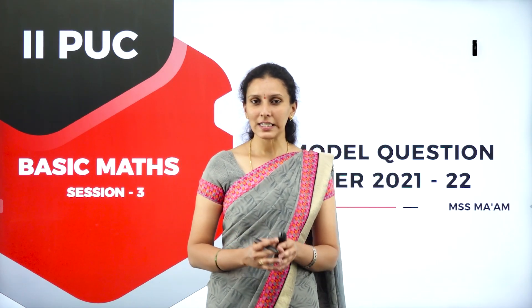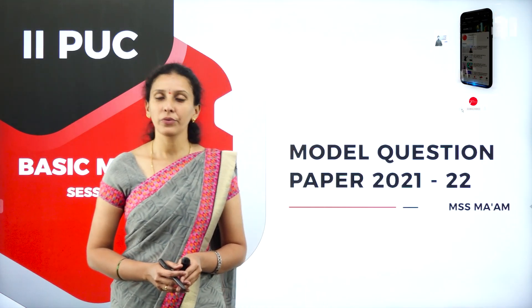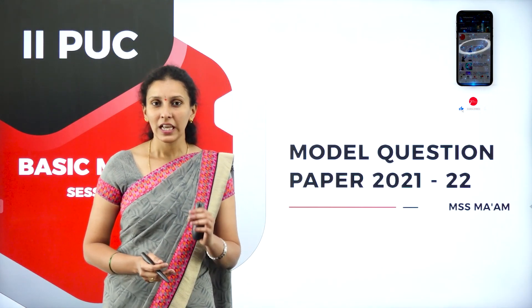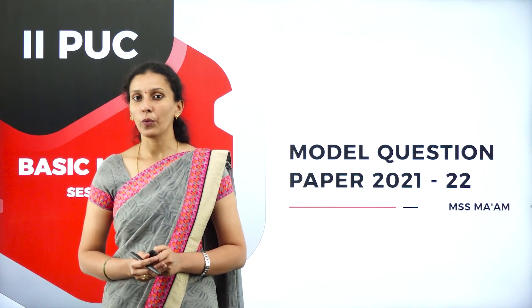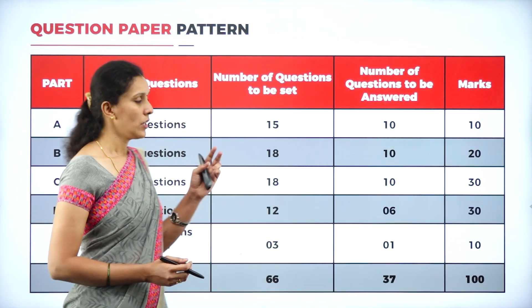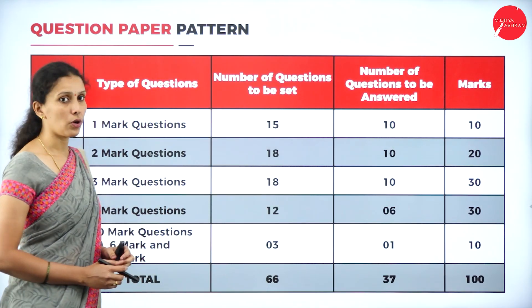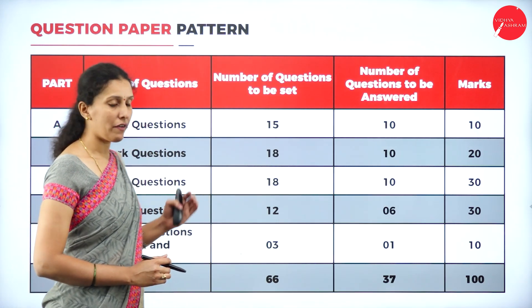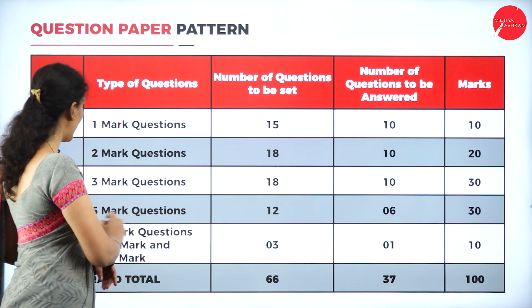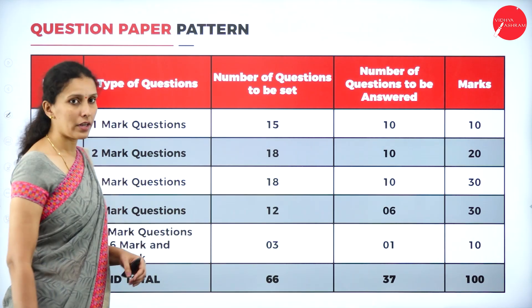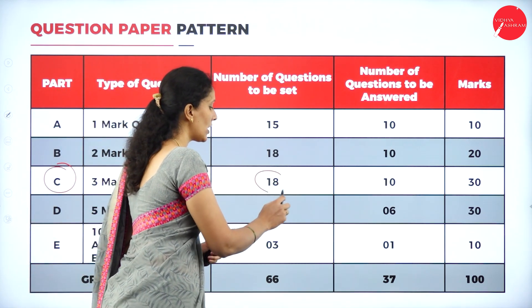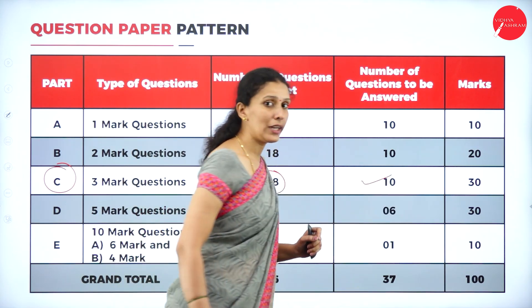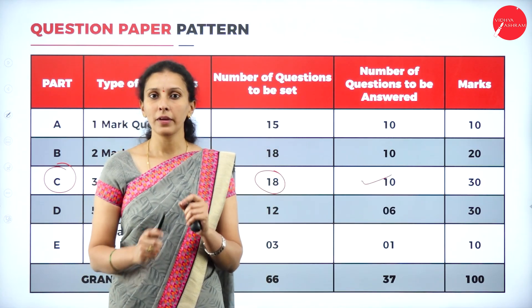In our previous session, we were discussing about the model question paper prescribed by the pre-university board of Karnataka. We have discussed Part A and Part B questions. In this session, I will be continuing with Part C questions, that is 3-mark questions. The question paper has 5 parts carrying 1, 2, 3, 5 and 10 mark questions. Here, the number of questions set on the question paper is 18, and you have to attend only 10 questions from 18.